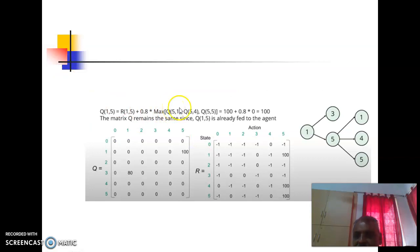Next, after reaching 1, the person has to go to the goal state, the person will go to 5. So Q(1,5) which is already calculated. Q(1,5) = R(1,5) + 0.8 * Max of Q(5,1), Q(5,4), and Q(5,5). You will get again 100, this value we have already calculated.